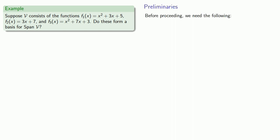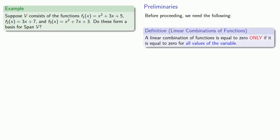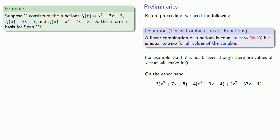Before we proceed, we need to establish a few ideas. Since our determination of whether a set of vectors is independent or dependent depends on whether we can find a linear combination equal to zero, it's important to understand that a linear combination of functions equals zero only if it's equal to zero for all values of the variable. For example, 3x plus 7 is not zero, even though there are specific values of x that make it equal to zero. On the other hand, a more complicated expression, after all the dust settles, may turn out to equal zero regardless of the value of x — that is a linear combination equal to zero.